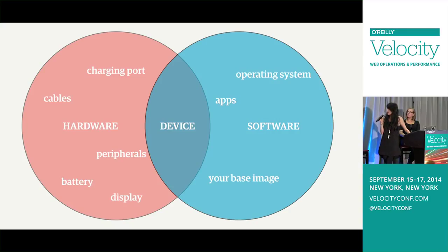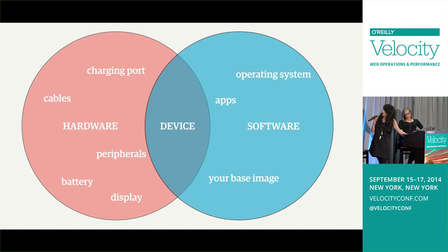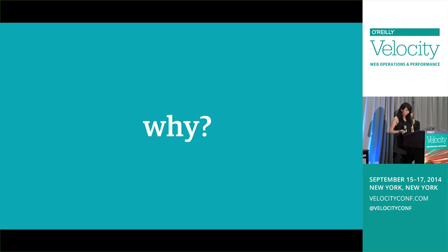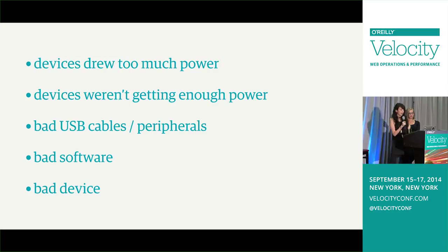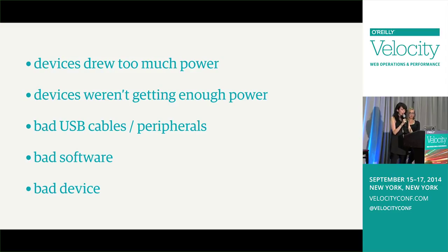These are some problems that can occur on the software side: the operating system can go bad, installed apps can either corrupt the system or be crappy installs, or your base image can be bad. The reasons we were having problems in our lab: devices would end up drawing too much power, some weren't getting enough power, we had bad USB cables, bad software, or a bad device. The Galaxy Nexus drew too much power to be hooked up to the hubs — we found out it had to be plugged directly into the outlet. Some USB cables were just bad and we had to buy new ones.